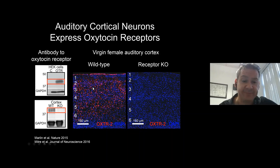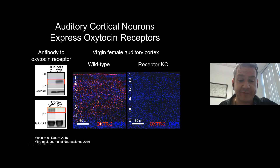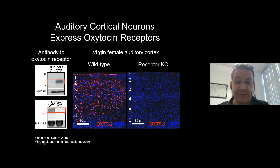Here's tissue from a wild-type virgin female auditory cortex — the six layers of cortex. DAPI is our counter stain for cell number. We tried several different epitopes; the second one, OXTR2, was the most specific. Here is our antibody staining with OXTR2 in red. Many cells in wild-type tissue are stained. No cells are stained in oxytocin receptor knockout animals.